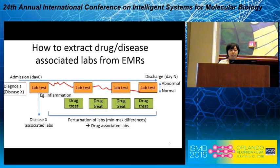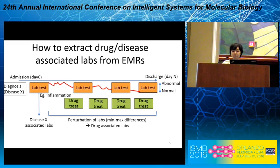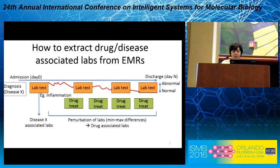I extracted drug- or disease-associated labs from EMRs for our repositioning. While there are over 100 types of lab measurement methods in that EMR system, we used general types of labs, meaning those for which over half of patients were tested. Imagining the patient timeline during hospitalizations: I selected the first lab in the first admission with a specific disease before any drug treatment, and that lab is used as a disease-associated lab.